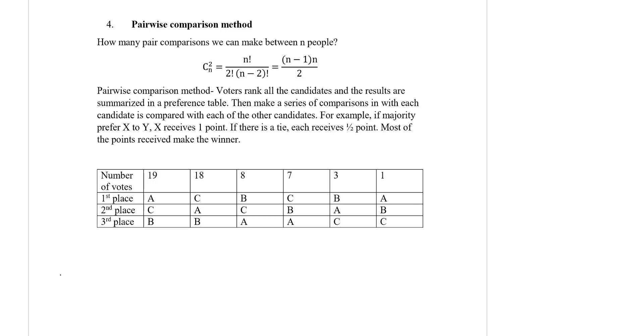For example, if a majority prefer X to Y, X receives one point. If there is a tie, each receives half a point. The candidate with the most points received is the winner.